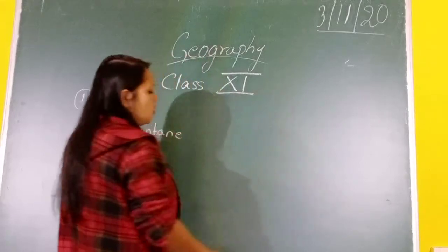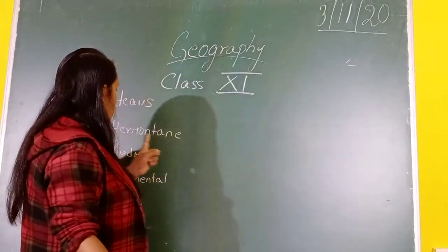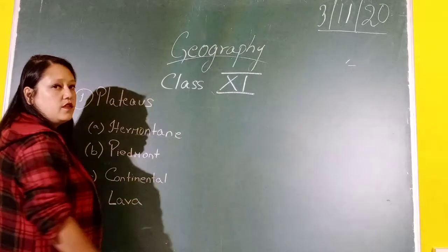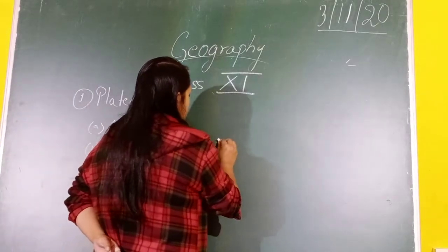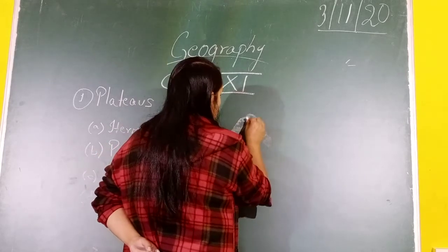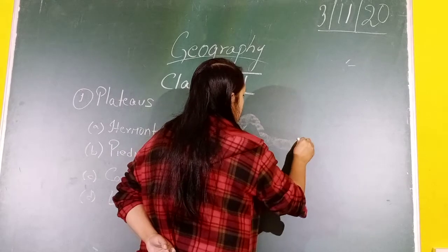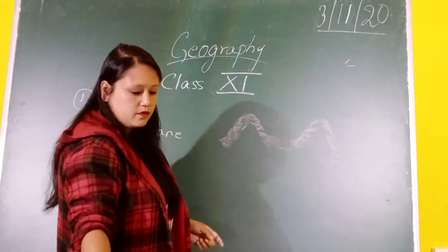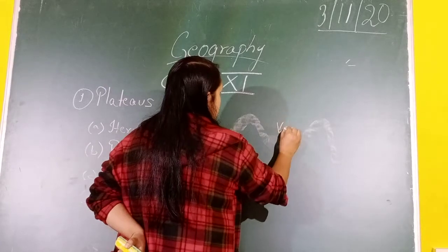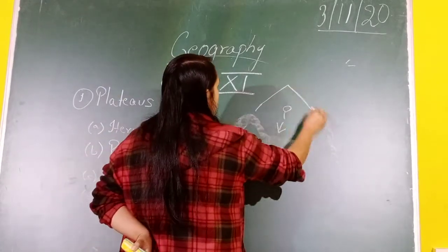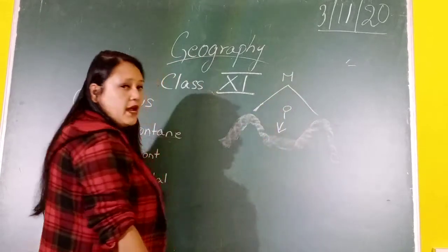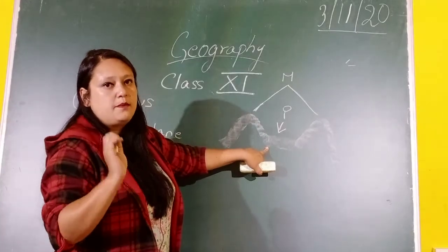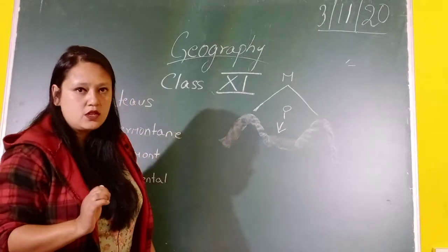The first type is the inter-mountain plateau. 'Inter' means interior, so this refers to the interior of the mountains. Looking at the diagram: this is a mountain, this is another mountain, and this here is a plateau. A plateau which is surrounded by mountains on all sides is known as an inter-mountain plateau.